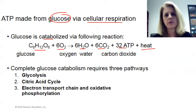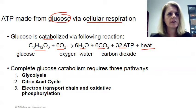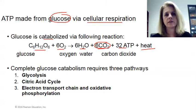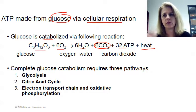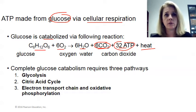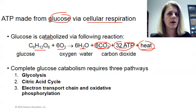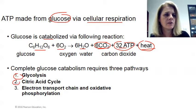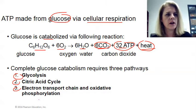So cellular respiration takes glucose, and in the presence of oxygen breaks it down to give you water, carbon dioxide, ATP, and heat. The carbon dioxide is what we breathe off. You also breathe off some water — if you ever breathe out and see steam coming from your mouth, that's some water generated by cellular respiration. You make ATP as your energy, and you also get heat as a byproduct, since breaking bonds generates some heat. This process takes three steps: glycolysis, the citric acid cycle, and the electron transport chain, which includes oxidative phosphorylation.